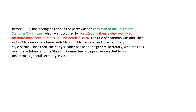Before, the post of General Secretary was known as Chairman of the Politburo's Standing Committee, but because it was occupied by Mao Zedong — who was a dictator ruling China for more than three decades — to abolish that symbol, the post was renamed General Secretary. Right now, Xi Jinping has been the General Secretary of the CCP since 2012.